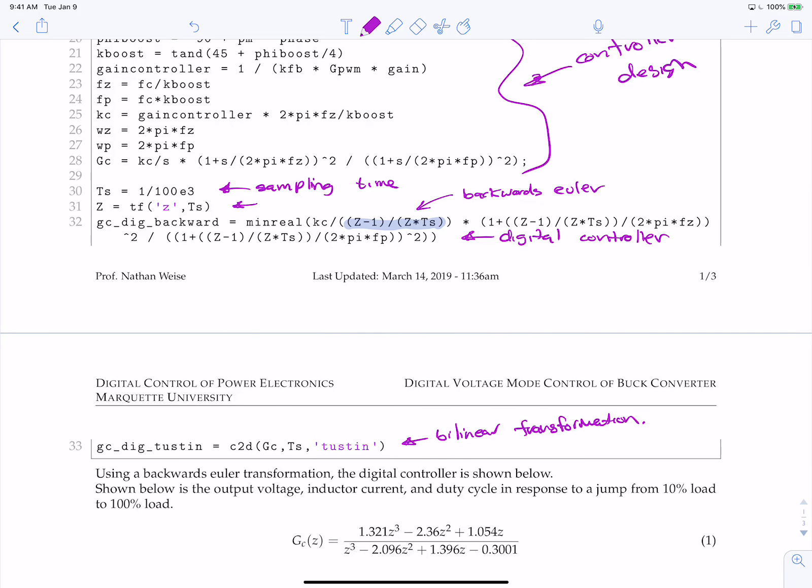So this one here, equation 1, this is doing backwards Euler. And what we're going to do is look at the output voltage and current under control with this controller due to a load step from 10% to 100% load.